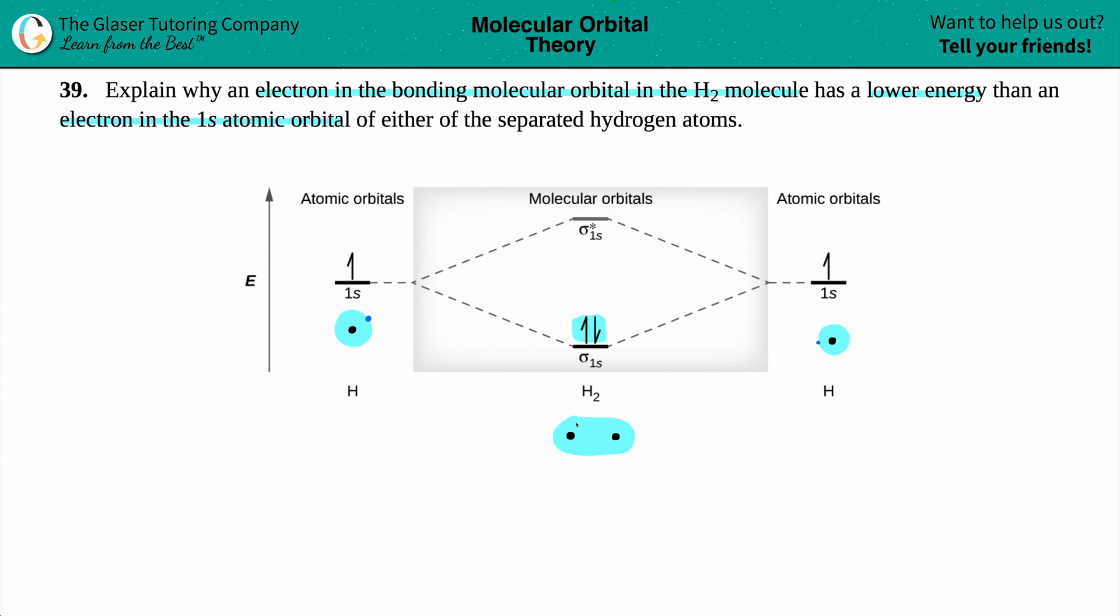And you have your two electrons anywhere in the blue area. Could they be here? Sure. Could they be over here? Sure. So now they're asking, well, why is this way lower in energy than what you started with?